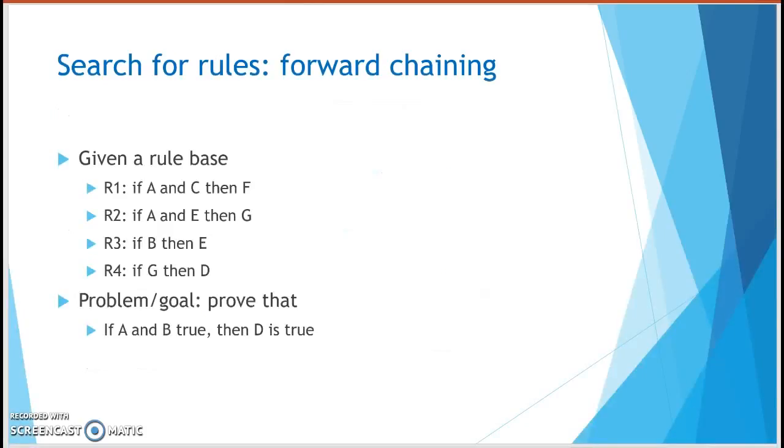Now let's look at the example of forward chaining. Given a rule base, rule 1, rule 2, rule 3, and 4, using a forward chaining, if we have to prove that A and B is true, then D is true. So because this is a forward chaining, so it's data driven, so you have to find from R1 to R4 about the statement first, then only you go to the conclusion.